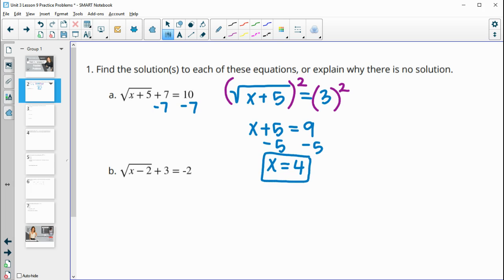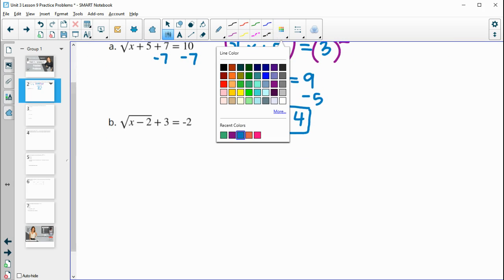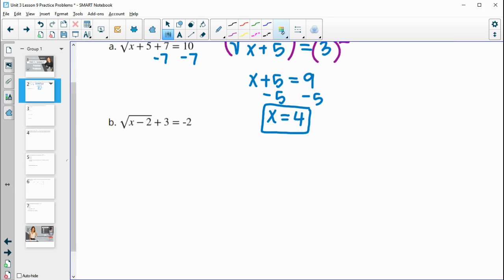Then you can always plug it back in. 4 plus 5 is 9. The square root of 9 is 3. 3 plus 7 is 10 to check that your number is, in fact, a solution.